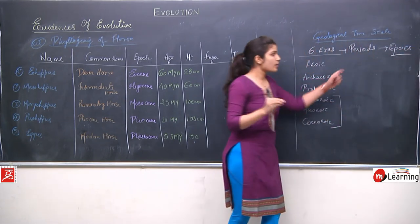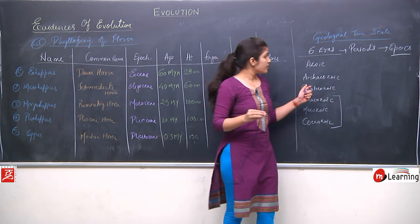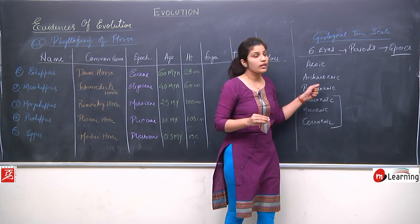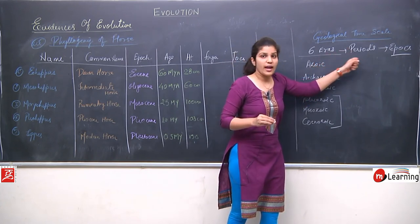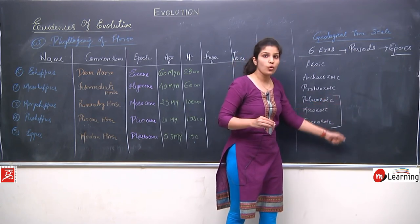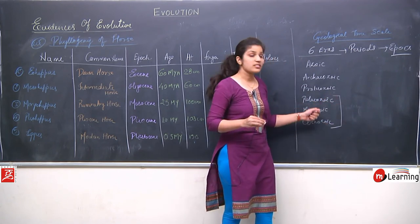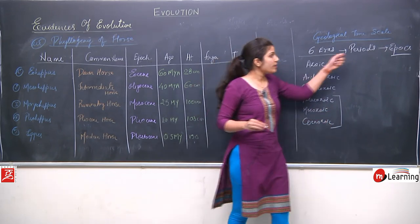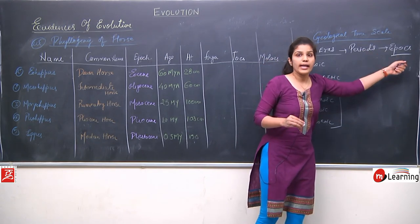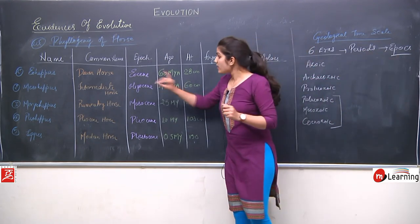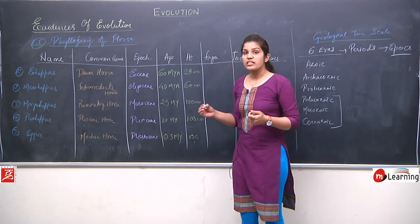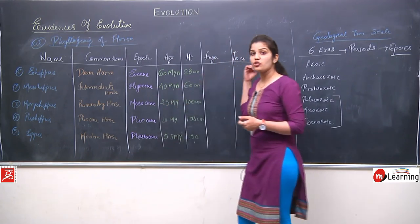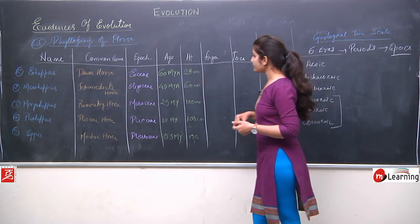The further division of periods is into epochs. The epochs include Eocene, Oligocene, Miocene, Pliocene, and Pleistocene. These epochs are the divisions of the periods within the geological time scale.